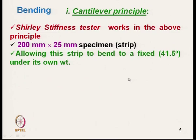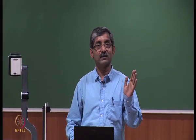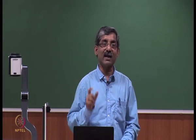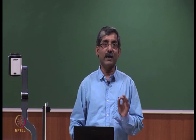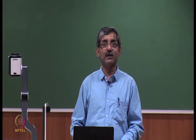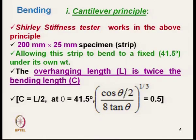Why 41.5 degrees? The overhanging length L is twice the bending length C, making the equation simple — the bending length is exactly half the overhanging length. If theta becomes 41.5 degrees, then the function of theta becomes 0.5, so we get directly C = L/2. To have this simple equation, we keep the angle at 41.5 degrees.